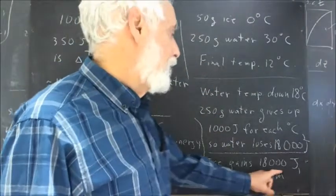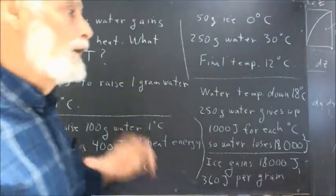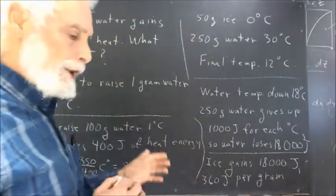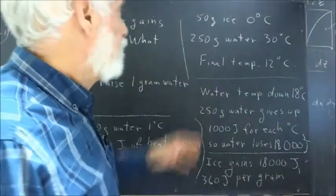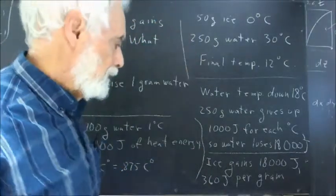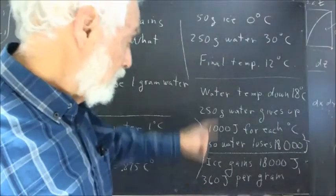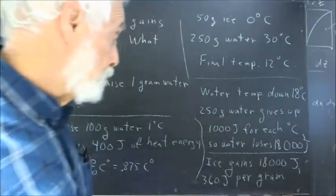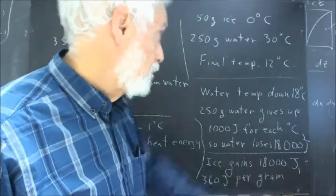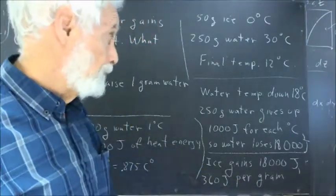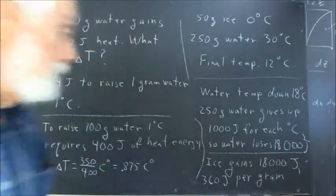It follows that the ice gains 18,000 joules because the water lost 18,000 joules. Now, we're assuming this is in a system where there's no contamination from outside. No heat energy enters or leaves the water-ice system. And, of course, that never is completely true, something we do our best to control for. Okay, but in any case, if the ice gains 18,000 joules, the 18,000 joules that the water lost, that comes out to 360 joules per gram of ice, as you can easily calculate by dividing the 18,000 joules by 50 grams.